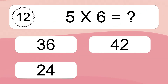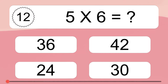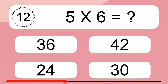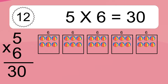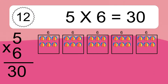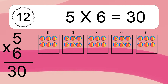Five times six equals what? Five times six equals 30. We have five boxes and each box has six colorful balls inside. If you count all the balls in all the boxes together, you will have five times six balls. This equals 30 balls.